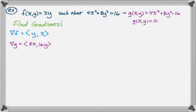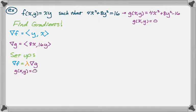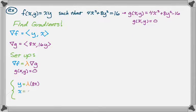Now we want to set up the system. The gradient of f equals lambda times the gradient of g, and g(x,y) = 0. So: partial x of f is y and partial x of g is 8x, giving y = λ·8x. Partial y of f is x and partial y of g is 16y, giving x = λ·16y. And the third equation is 4x² + 8y² = 16.